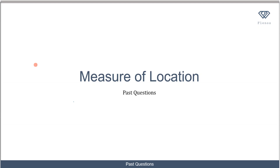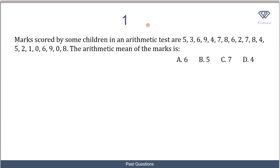Okay, so now let's look at some past questions to see how to apply some of the concepts that we've learned. In this first question, we are told that marks scored by some children in an arithmetic test are 5, 3, all the way up to 8. The arithmetic mean of the marks is what?